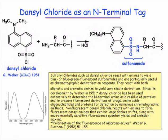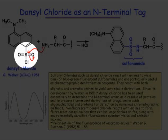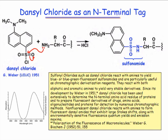Dansyl chloride is a second, more recently developed N-terminus tagging reagent. Like Sanger's reagent, dansyl chloride is a good electrophile and is able to react with the nucleophilic amino termini of peptides. The sulfonyl chloride functional group is subject to the same addition-elimination mechanism as we saw for Sanger's reagent. Nucleophilic addition of the amino group to the sulfur-oxygen double bond, followed by beta-elimination and proton transfer, gives the sulfonamide functionality.